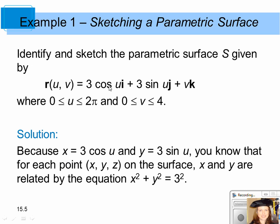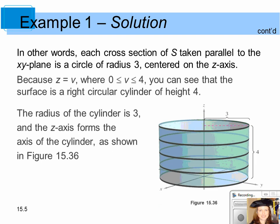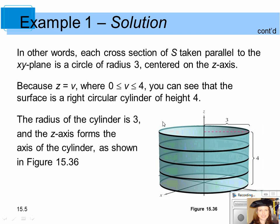We have x equal to 3cosine(u) and y equal to 3sine(u). Squaring both and adding gives x² plus y² equals 3², which is the equation of a circle in the xy-plane. Since z equals v and v is between 0 and 4, z ranges from 0 to 4. So x and y represent the circle while v represents z going from 0 to 4.